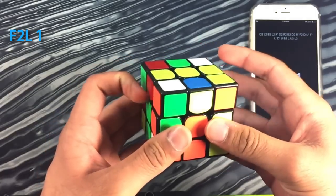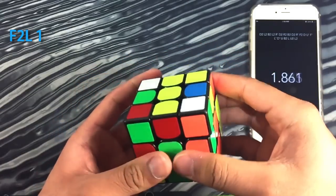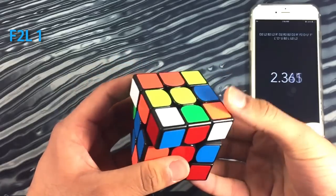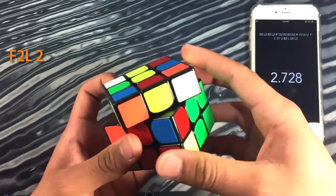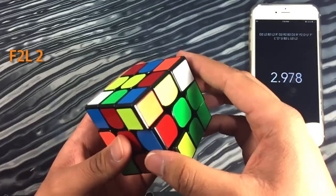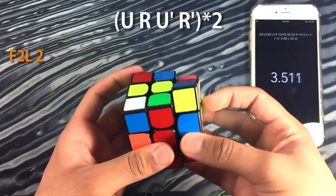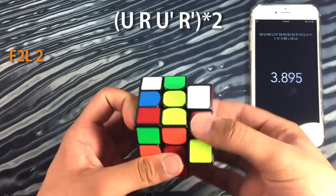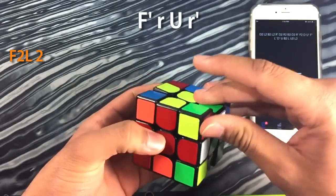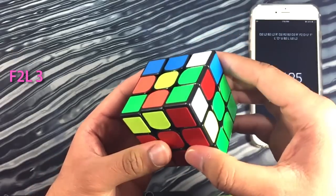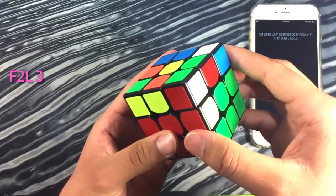That finished my cross and immediately I saw the green and orange pair right there which I took out and reinserted properly. And then from here I saw the blue and red corner piece fly over the blue and red edge and then I applied this quick trigger to solve that and insert it using the F' lowercase RU lowercase R' algorithm which is very handy to insert pairs on the left side.